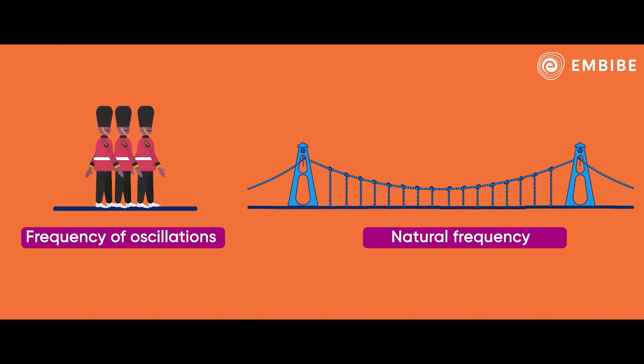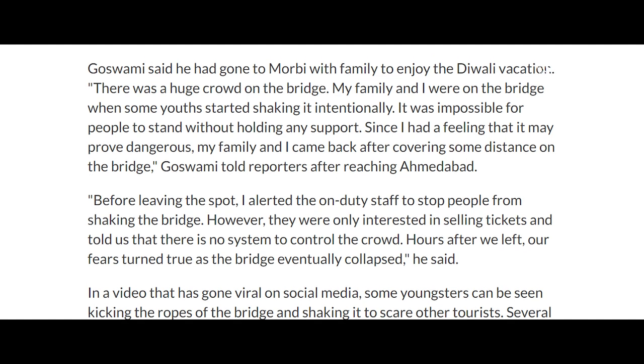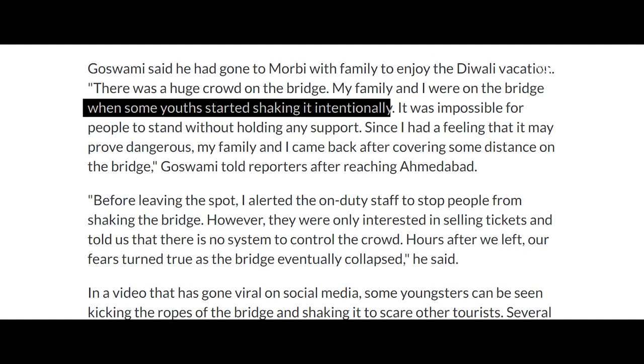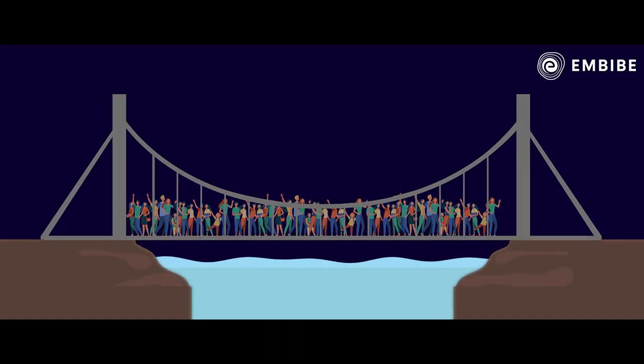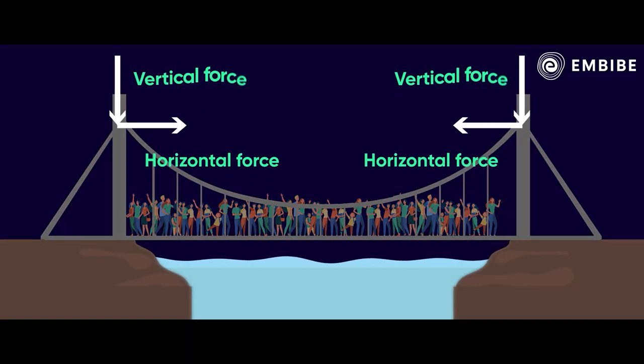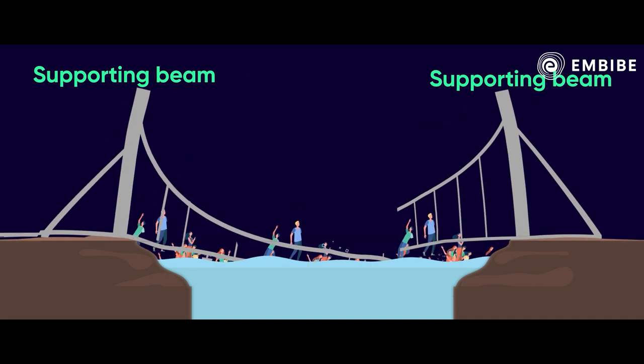Coming back to the Gujarat bridge — several media reports state that some people were intentionally shaking the bridge. Overload is cited as another possible cause of this incident. Most sources say the bridge's capacity was only 100 to 150 people, but at the time, 400 to 500 people were overcrowded on it. Due to this overload, the horizontal forces increased, causing the supporting beams to bend and the bridge to collapse.